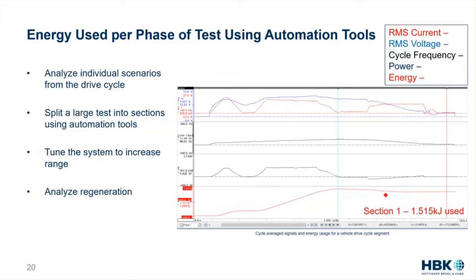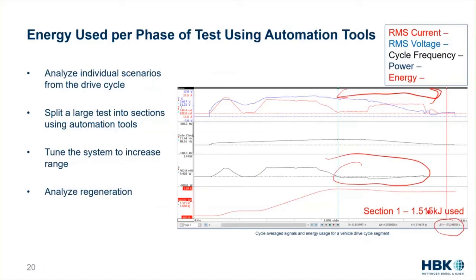Taking one segment, we can look at its frequency throughout, look at its power, analyze regen, and look at energy usage per section to think about how to improve the system and tune the inverter. Between my two cursors here, I've got a regeneration of 173 joules on a total usage of 1,500 joules — a pretty small vehicle so not a ton of energy being used. Using these insights and automation tools — really just snipping a segment and giving you output energy — we can understand how regen works, how to increase range, and whether making regen more aggressive might hurt the user experience.